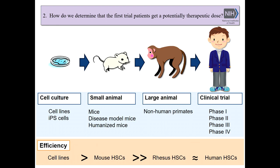How do we determine that the first trial patients get a potentially therapeutic dose? That's shown through repeated testing in cells and small animals. I want to reiterate the importance of the large animal model. Cindy Dunbar started gene transfer trials 25 to 30 years ago based on available data in mice, which predicted it would work.